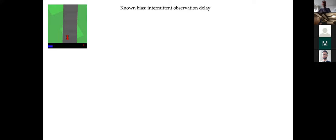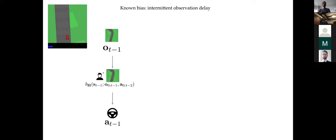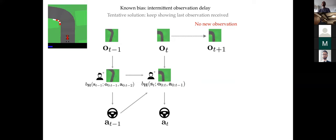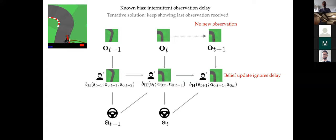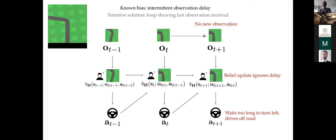Now let's look at a domain where the problem is not bandwidth but intermittent observation delays. In this real-time driving video game, the user receives a top-down image observation at each time step, processes it, and chooses to steer left or right. Sometimes unexpectedly, the environment won't provide a new observation, and the default interface simply copies the previous image and shows it again. The problem is users may not be able to incorporate the delay into their state estimation and may take too long to react to time-sensitive situations like approaching a left turn — even when they could clearly tell there was a delay.